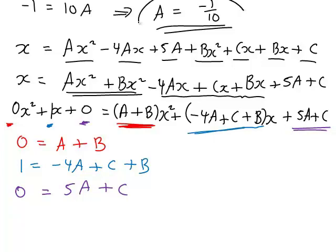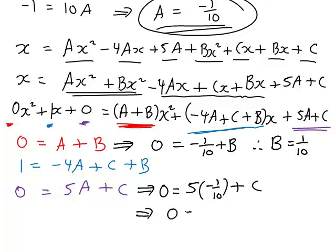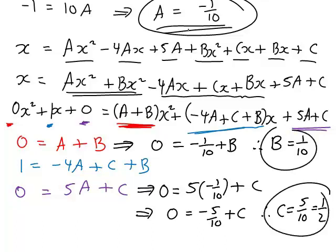We also know a equals negative one tenth. Substituting into the first equation, 0 equals negative one tenth plus b, so b equals one tenth. Using the third equation to find c: 0 equals 5 times (negative one tenth) plus c, which gives 0 equals negative five tenths plus c, so c equals five tenths, which simplifies to one half. We have now found all three constants: a equals negative one tenth, b equals one tenth, c equals one half.